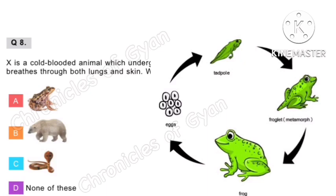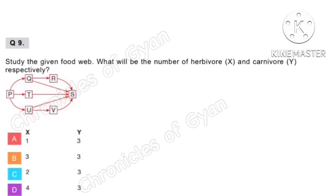Question 9. Study the given food web. What will be the number of herbivore X and carnivore Y respectively? The number of herbivore X is 3 and the number of carnivore Y is 3. Correct answer is option B.